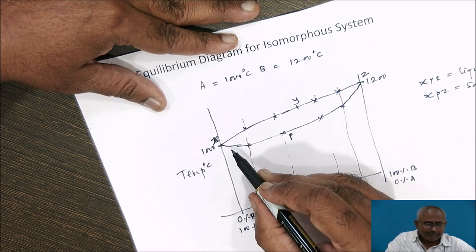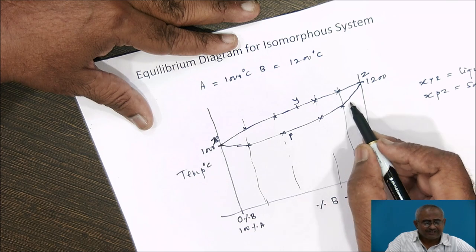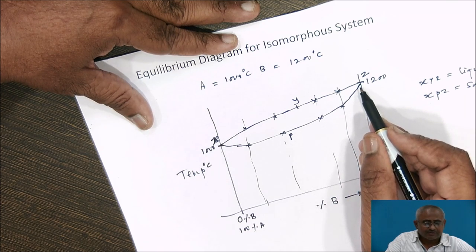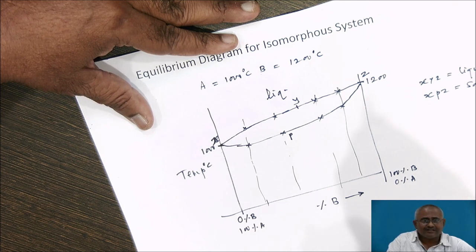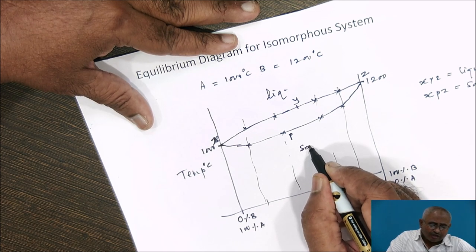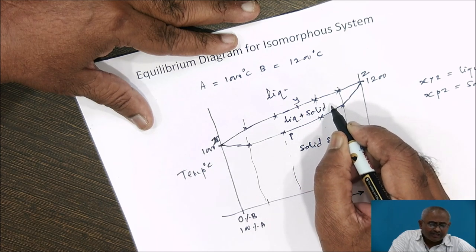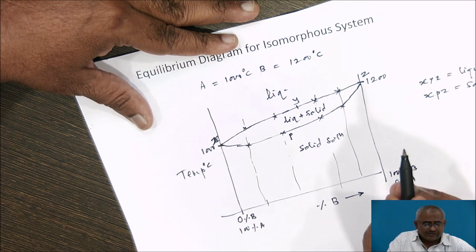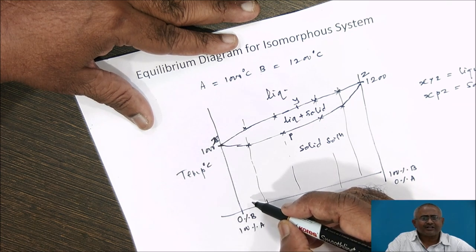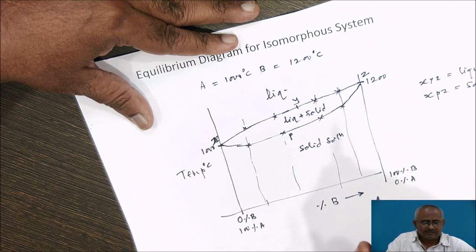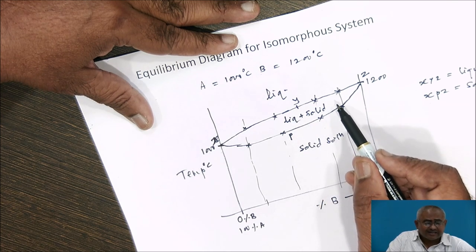The liquidus line represents the liquidus temperatures of various compositions in the system. Above the liquidus line there will obviously be liquid phase present. Below the solidus line there can be none other than solid solution. In between the liquidus and solidus lines, both liquid and solid are present. For every composition in this system, the liquidus temperature and solidus temperature are different — this is characteristic of a solid solution alloy, and all solid solution alloys are characterized by a freezing range.